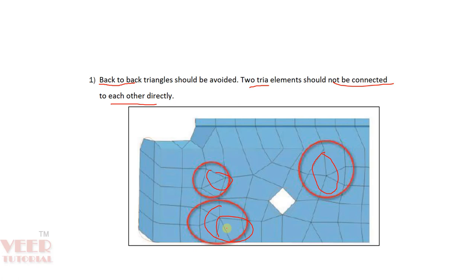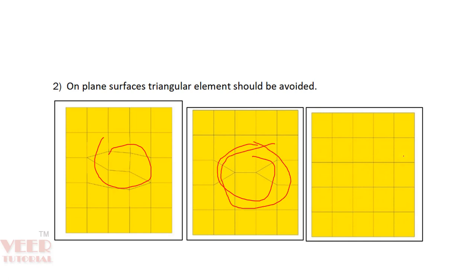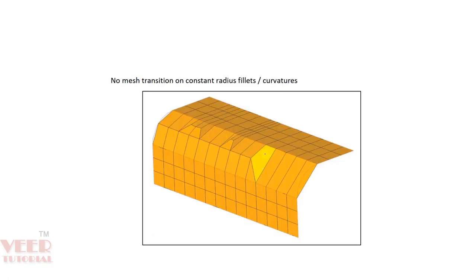Especially on a plain surface, we should avoid this type of trias. These are opposite trias, and opposite trias generally cancel each other. If we do the remesh of opposite trias, they will create a quad. So we should avoid this type of meshing on the fillet area as well.